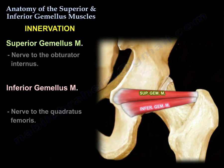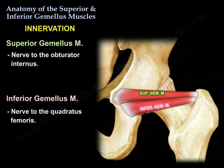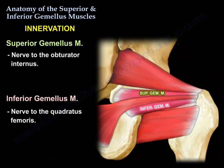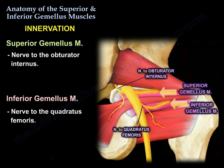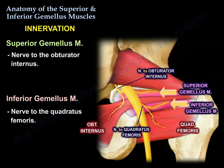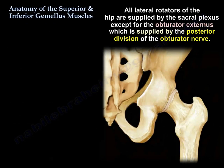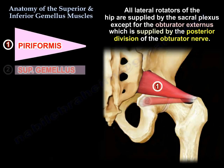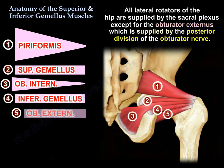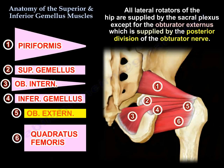Innervation: the superior gemellus is innervated from the nerve to the obturator internus. The inferior gemellus is innervated from the nerve to the quadratus femoris. All lateral rotators of the hip are supplied by the sacral plexus, except for the obturator externus which is supplied by the posterior division of the obturator nerve.